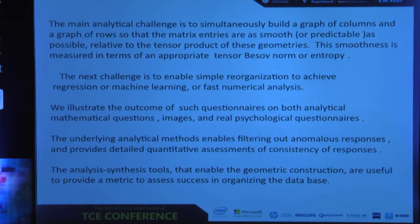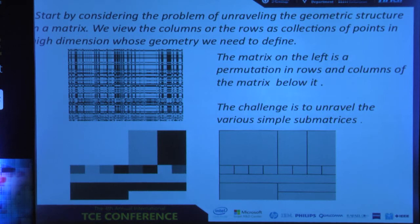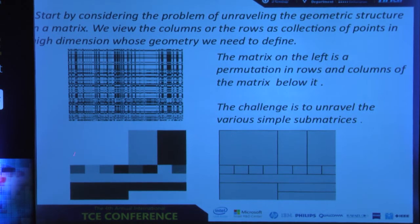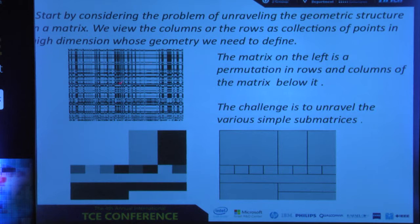Let's think of this as an initial challenge. I have a very structured matrix here, and somebody just permuted the columns and permuted the rows. This very nice structure was converted to a seemingly disorganized structure. The issue is: can we easily do the inverse problem of looking at that, organizing the columns and the rows in such a way that we recover the original structure?